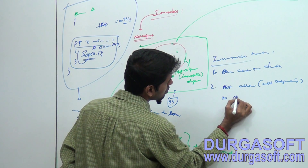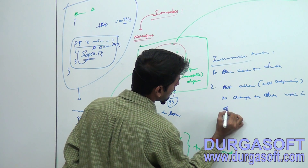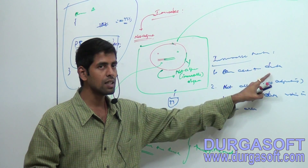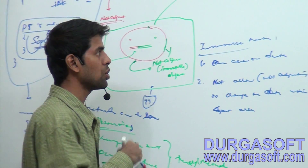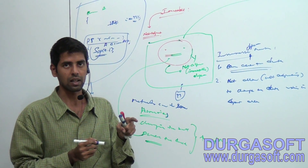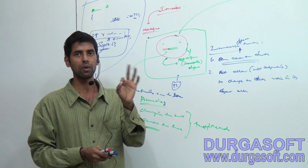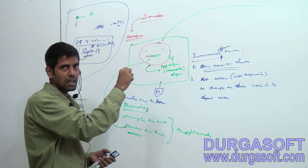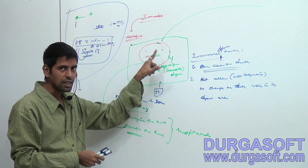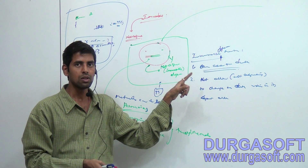Because of this immutable nature, the object is not adjusting to change the data within its object area. We have one good feature: you can access the data. Immutable object nature means you can access the data. But I have one small requirement - I want to access this object's data. I know it will not allow me to change the data within its area, but I want to access this data. Yes, you can access it.